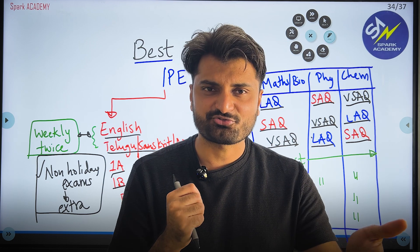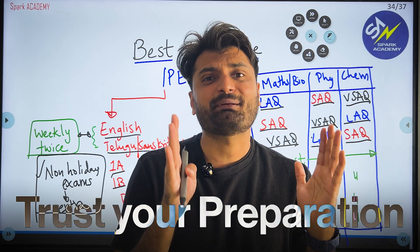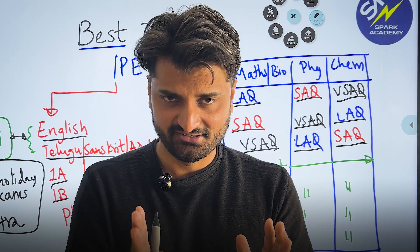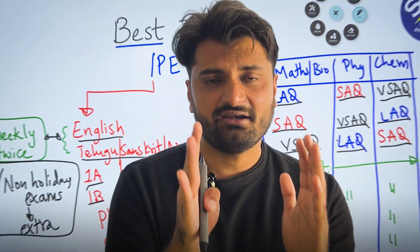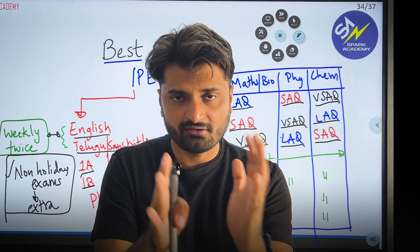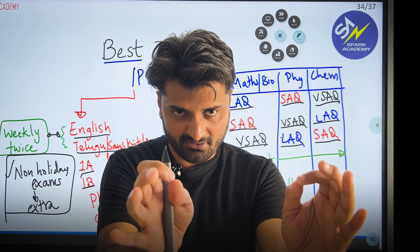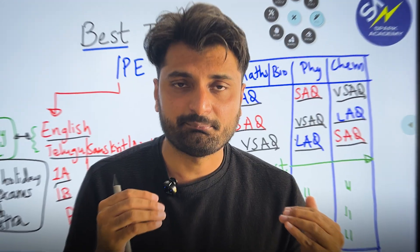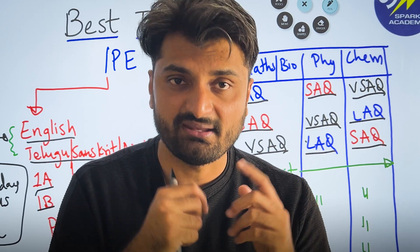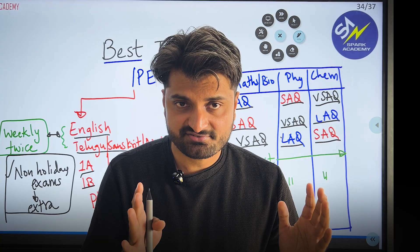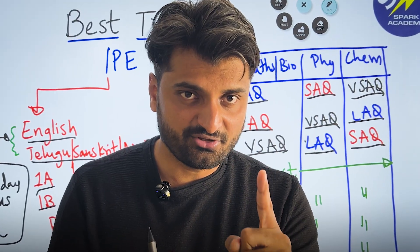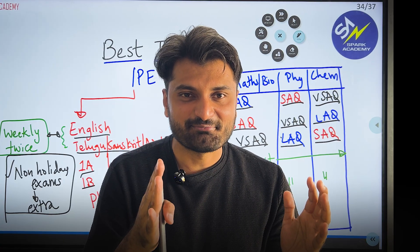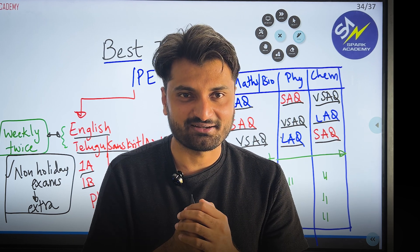Finally, to all intermediate students — trust your preparation. Stick to a simple plan and a simple strategy. Follow the timetable: three hours in the morning and three hours in the evening. Cover all subjects before the exam starts, one subject at a time each day. I am sure all of you will get full marks in IP exams. Share this video with friends preparing for IP exams, and give your feedback on whether you are able to follow this timetable.